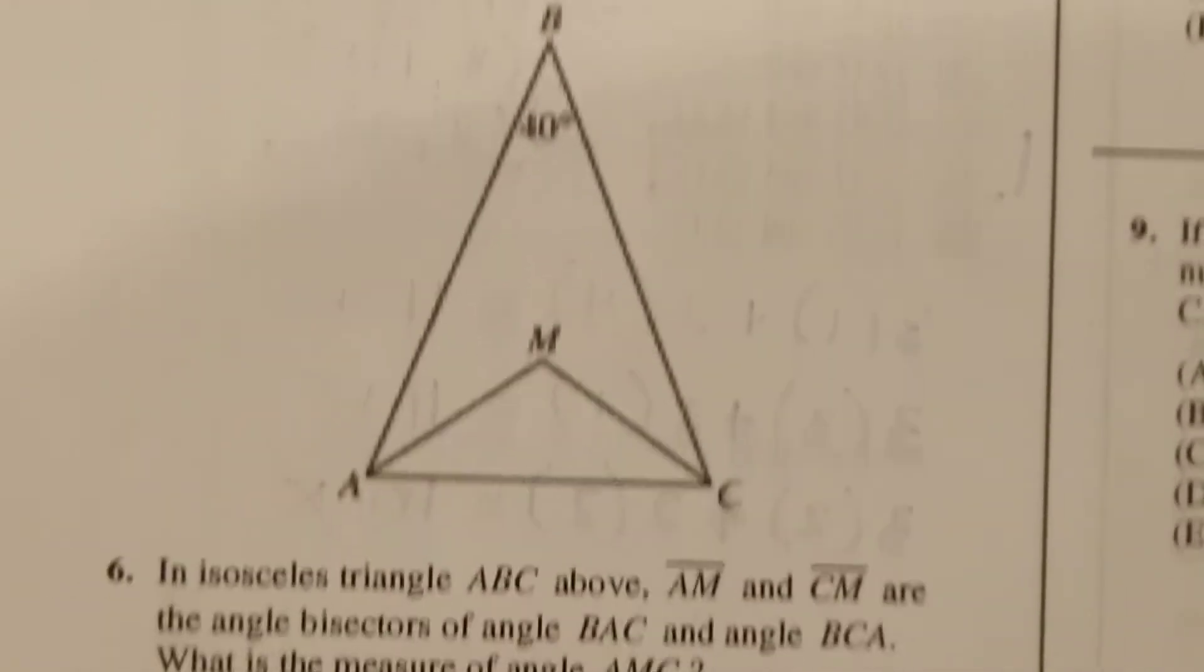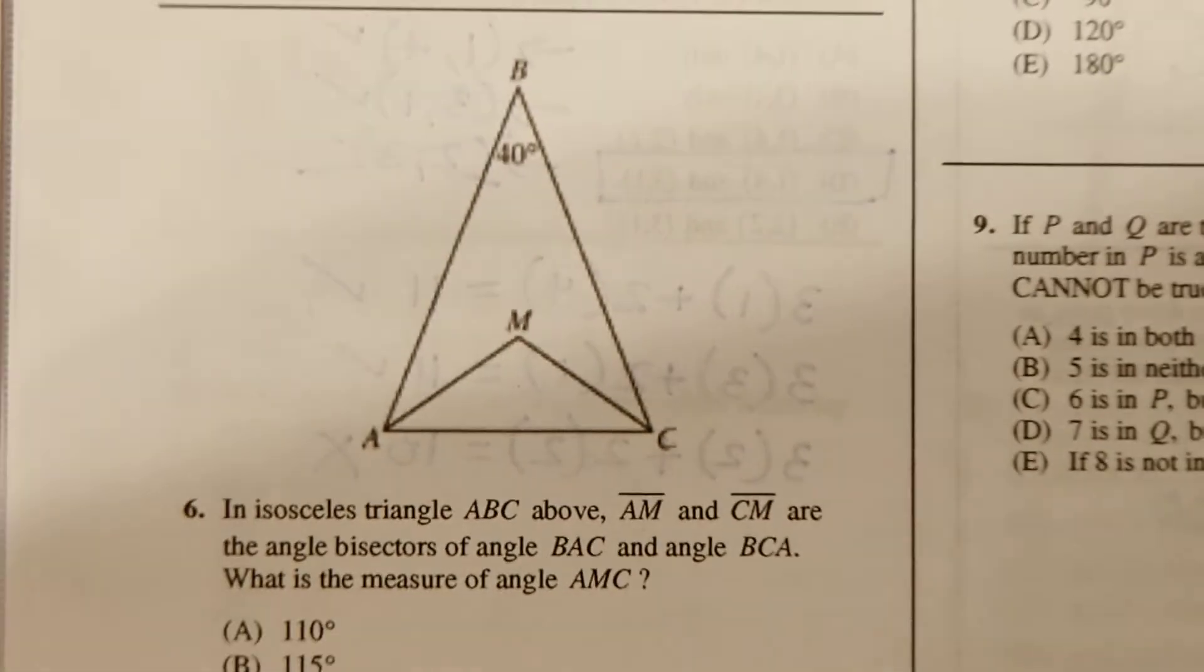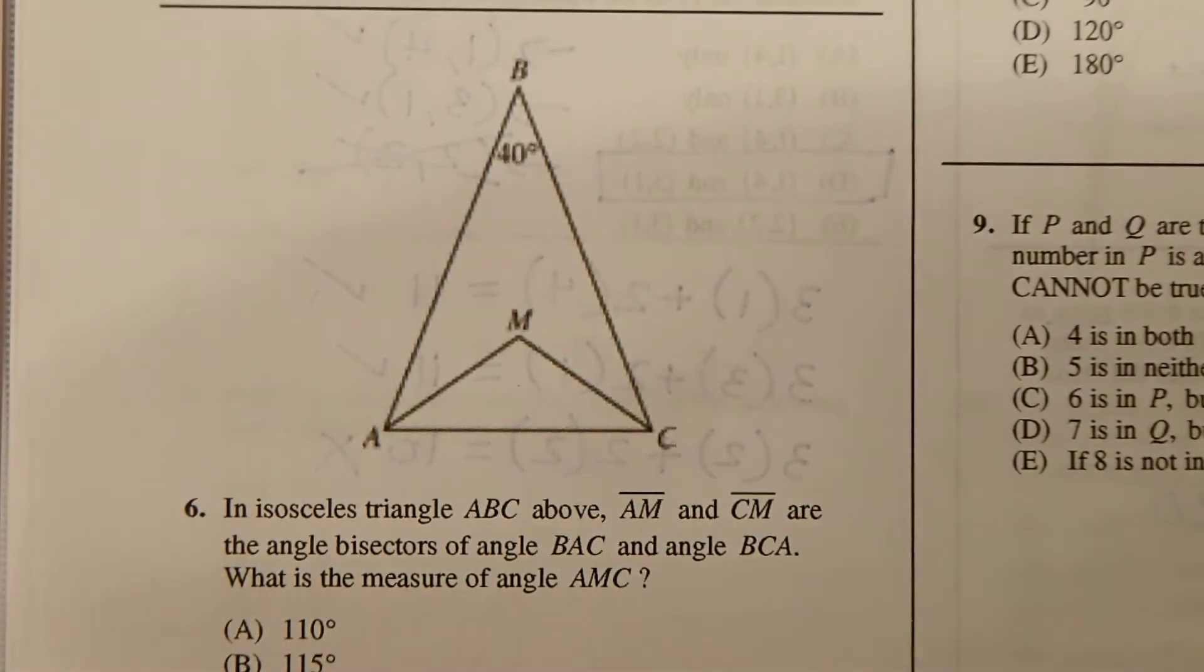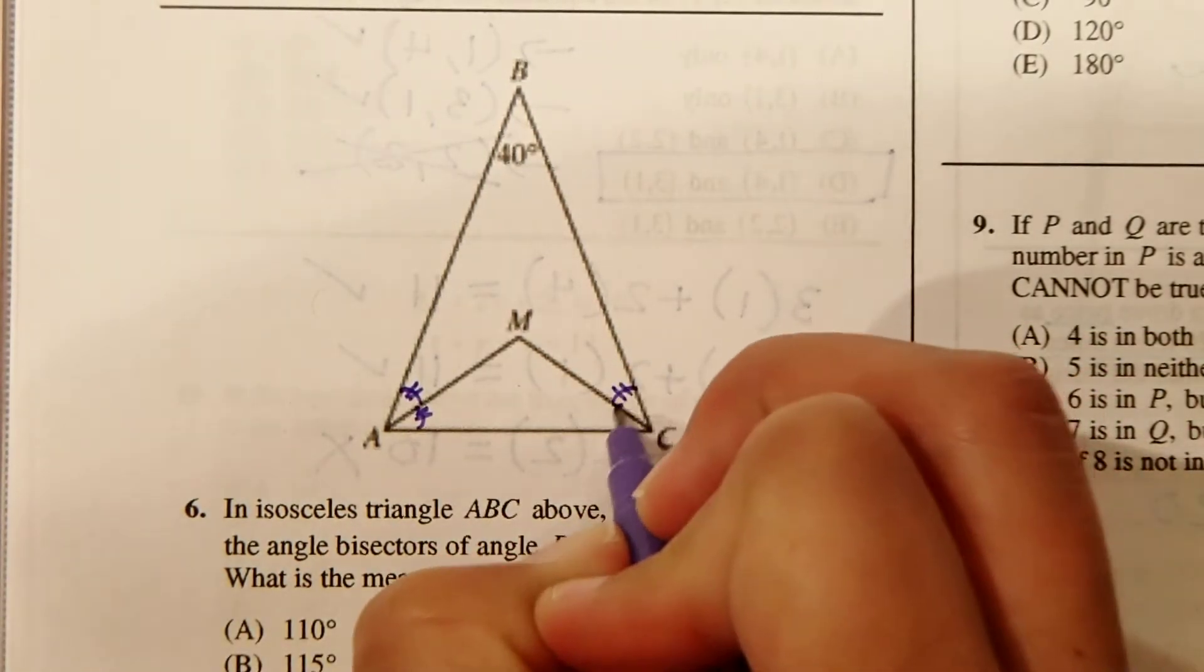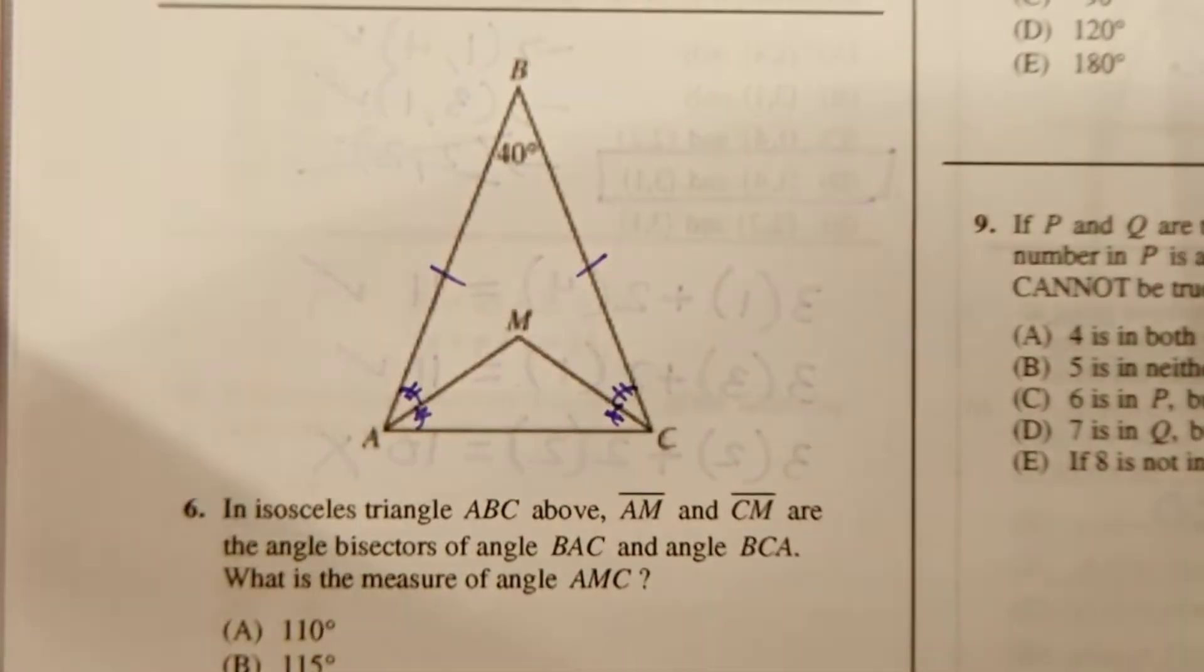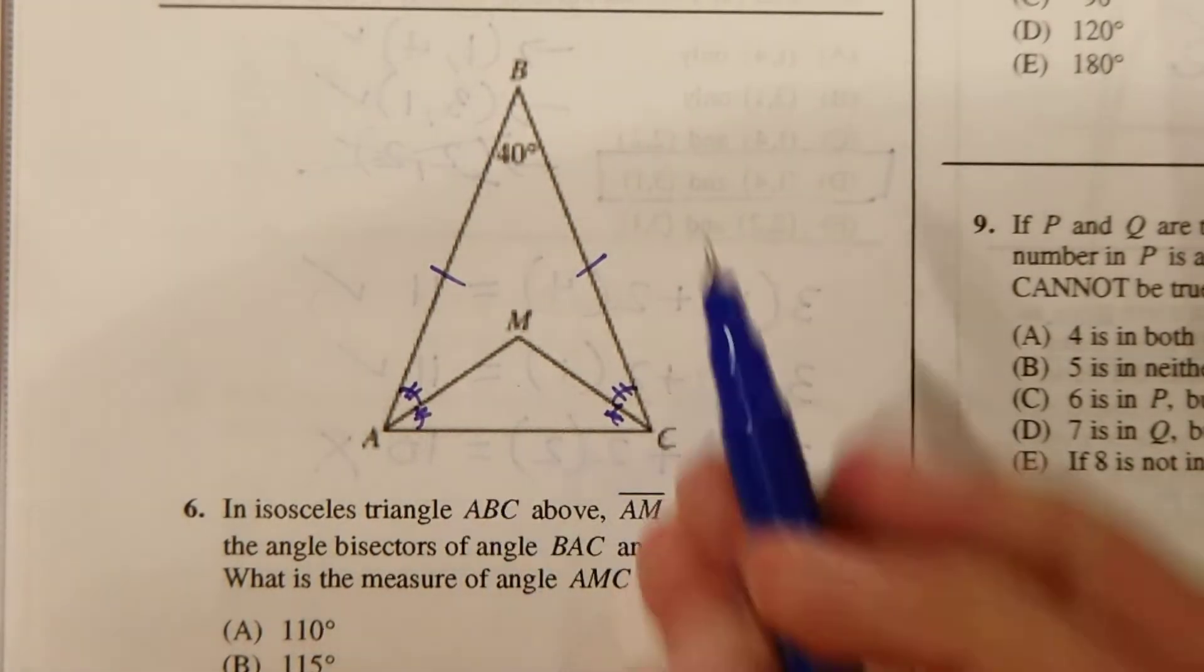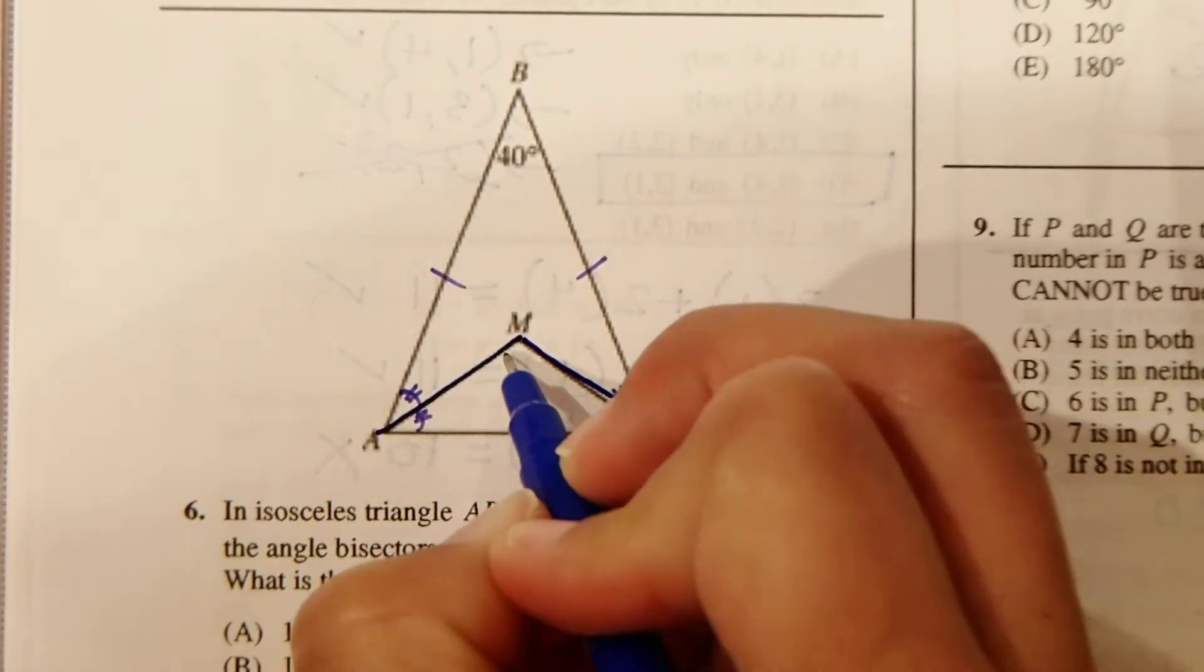Number 6. Let's look at the question diagram. So an isosceles triangle ABC above, AM and CM are angle bisectors. So I'm going to go ahead and write that these two are the same, and these two are also going to be the same, as this is an isosceles here. What is the measure of angle AMC? So we're looking for AMC, which is this angle right here.